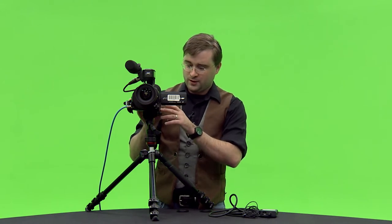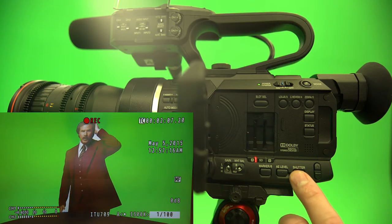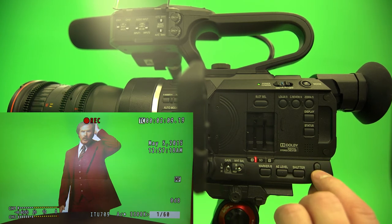If you're shooting outdoors you can go faster, starting somewhere in the 1/100th of a second range depending on how bright it is outside. To adjust your shutter speed hit the shutter button. It'll highlight the shutter speed and then you can scroll up or down to adjust your speed.